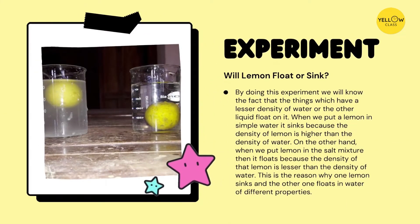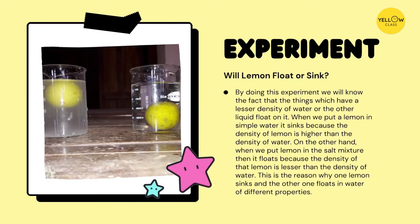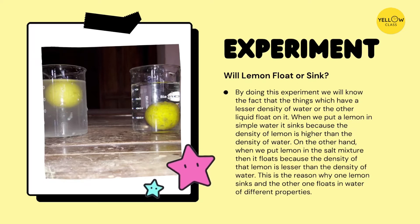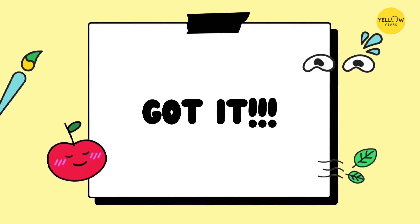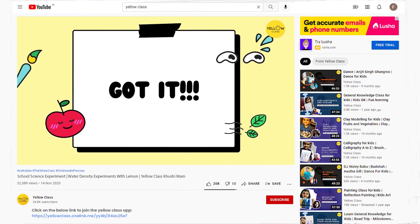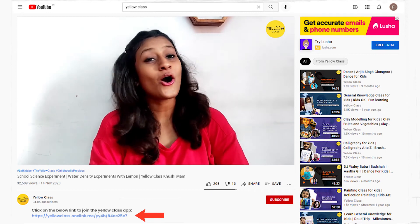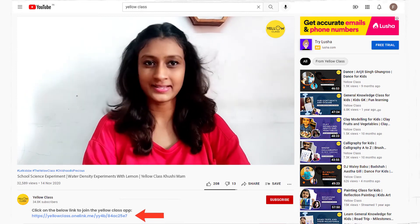In the experiment — will the lemon float or sink? Things which have a lesser density than water or another liquid will float on it. When we put a lemon in simple water, it sinks because the density of the lemon is higher than the density of water. On the other hand, when we put the lemon in the salt mixture, it floats because the density of the lemon is lesser than the density of the salt water. I hope you got all the answers behind the sinking and floating principle.